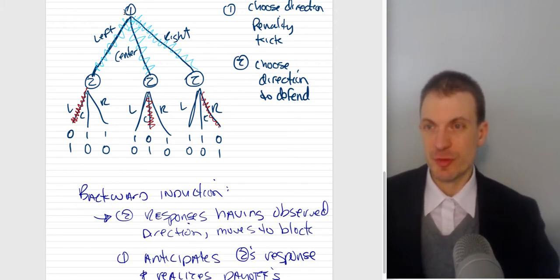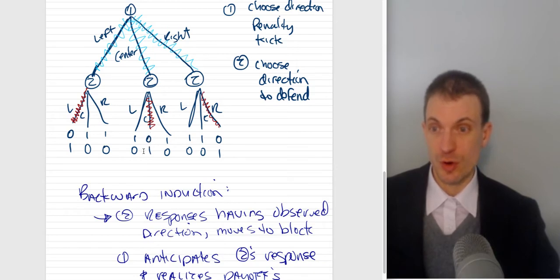Alright. And same thing here. So suppose the penalty kick went center, then goalkeeper can go left, center, or right. If they go center, they both went center. There's no goal. And so there's a payoff of one to player two, payoff of zero to player one. And then accordingly, when a goal is scored, it goes to player one.